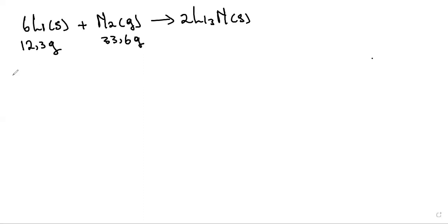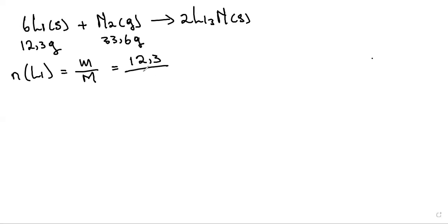We start by finding the number of moles for both reactants — the moles available at the start of the reaction. For lithium, the mass is 12.3 g and the molar mass is 7 g/mol from the periodic table. So 12.3 divided by 7 gives us 1.76 moles of lithium.